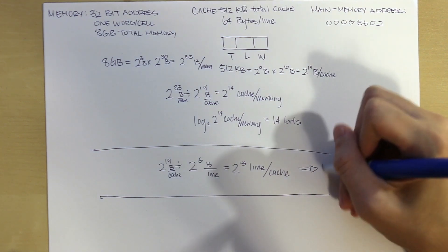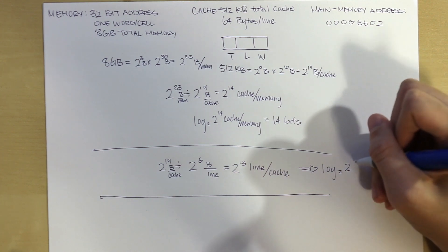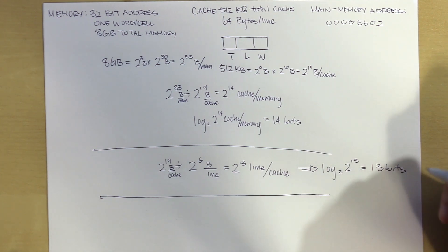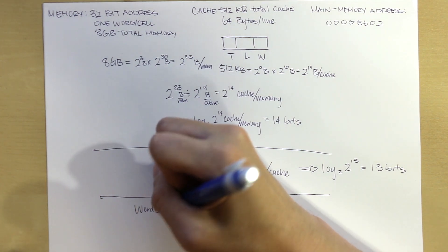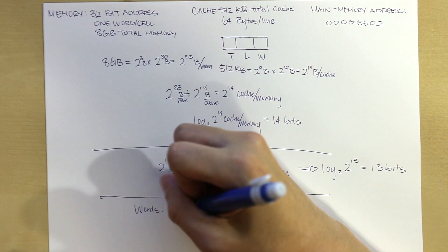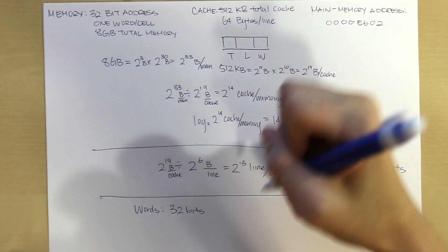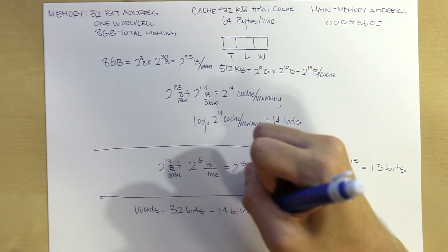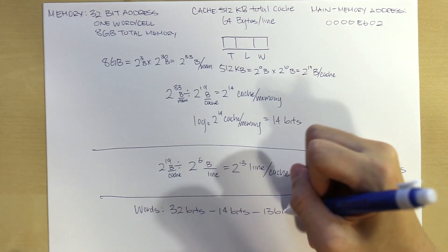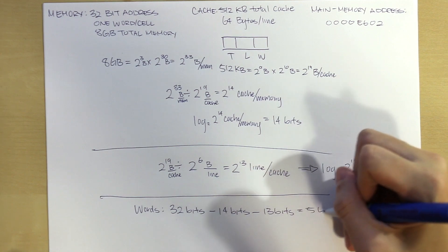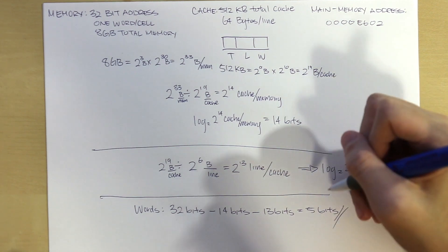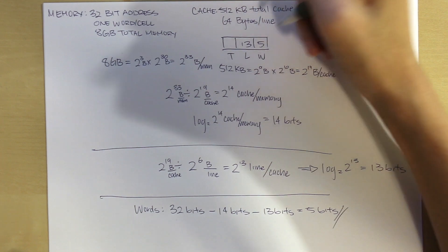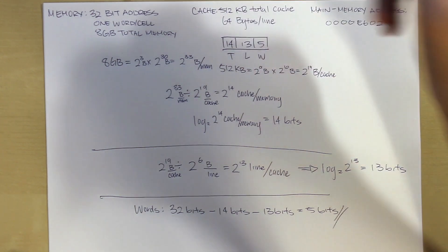Taking log base 2 of 2^13 gives us 13 bits, which is our line field. To find the word size, since we know the total address is 32 bits, we subtract: 32 bits minus 14 bits (tag) minus 13 bits (line) gives us 5 bits — and that is our word size. I'm filling the table in now.